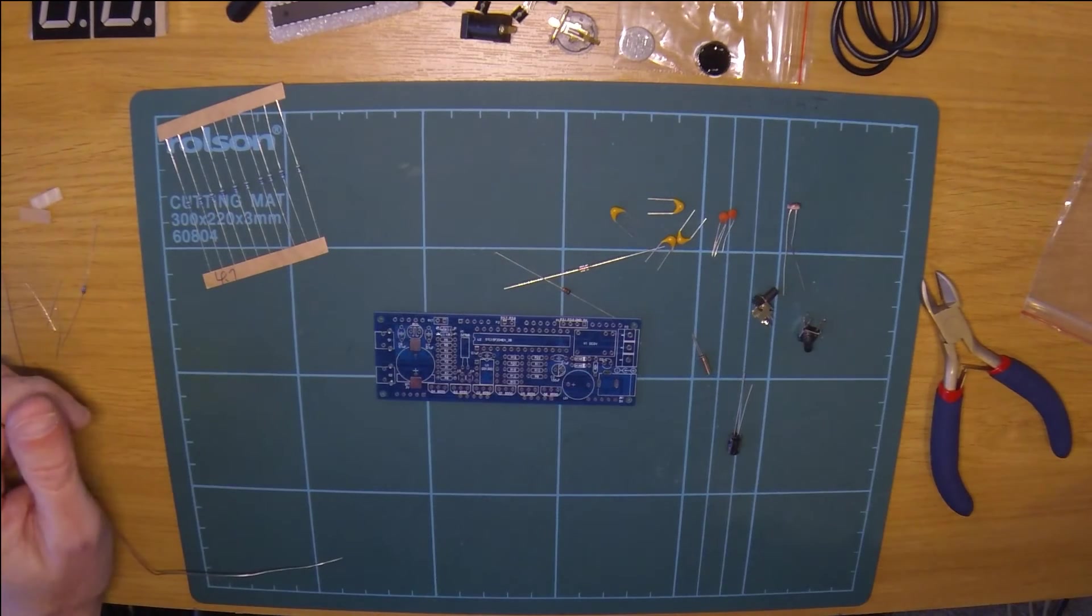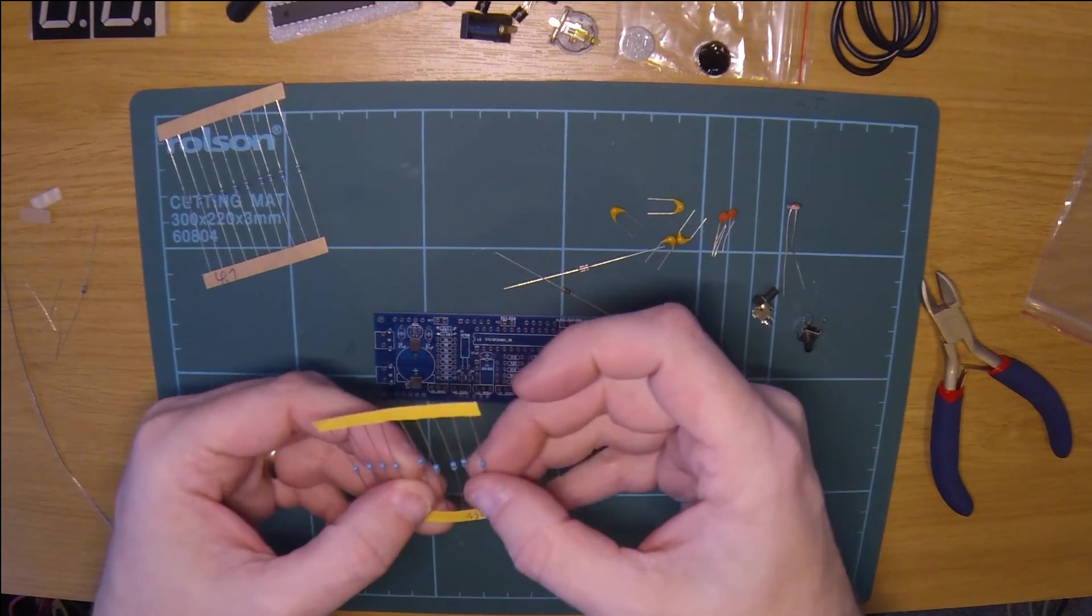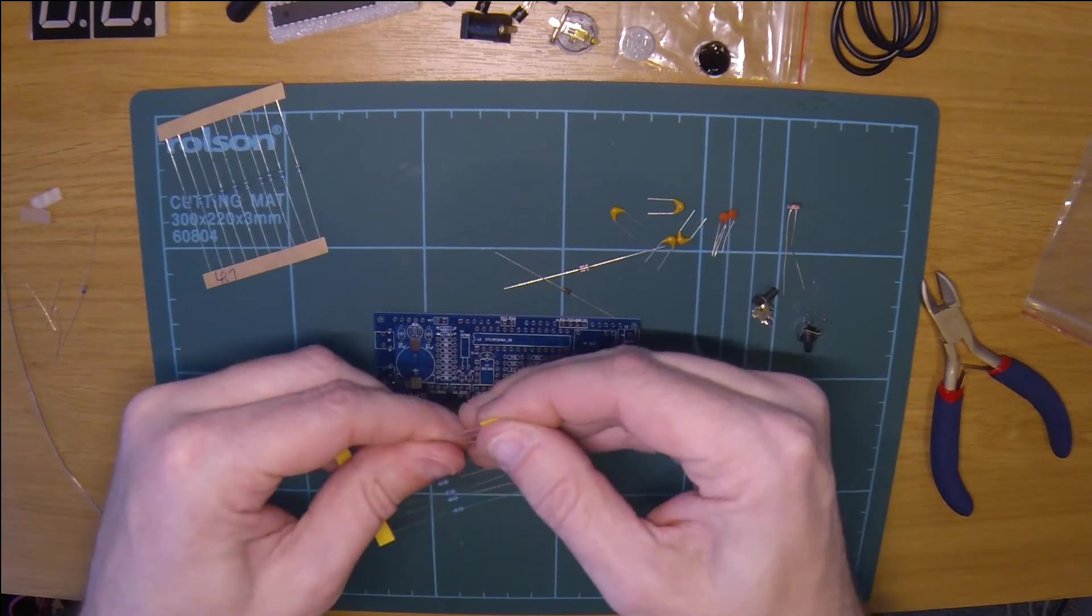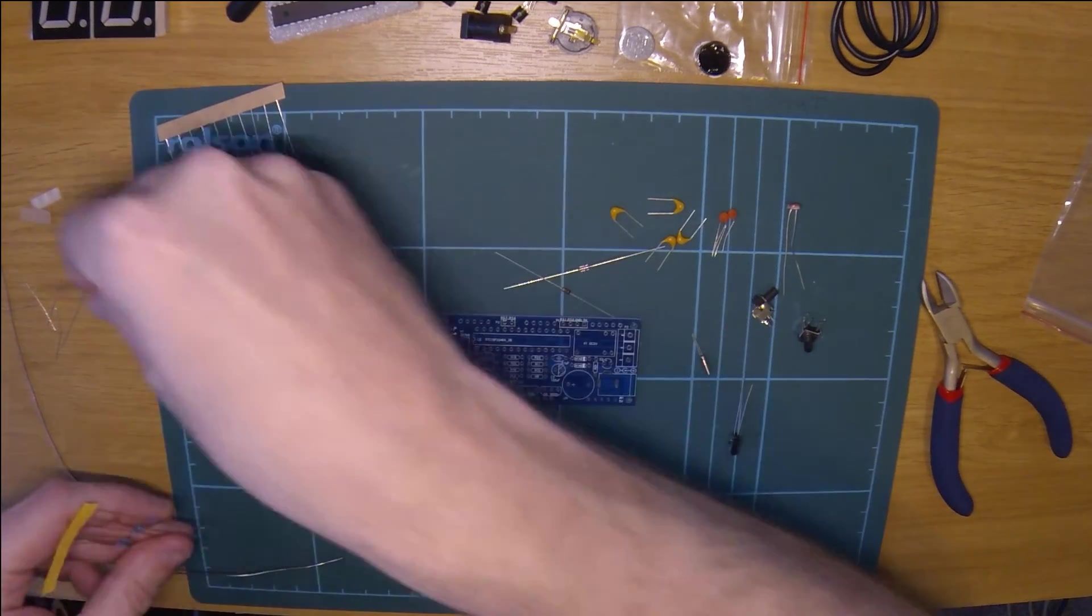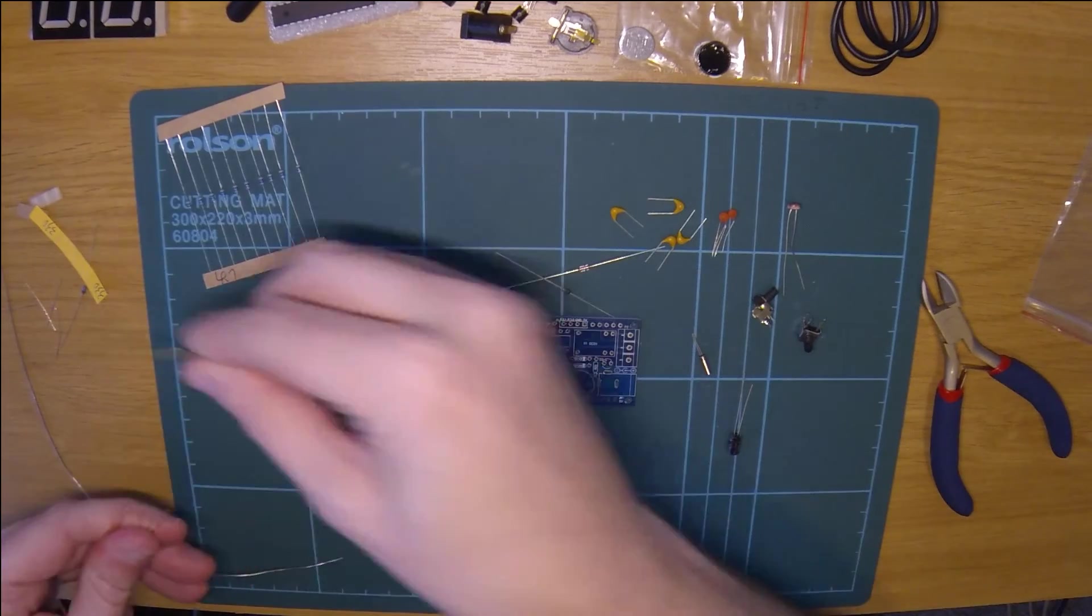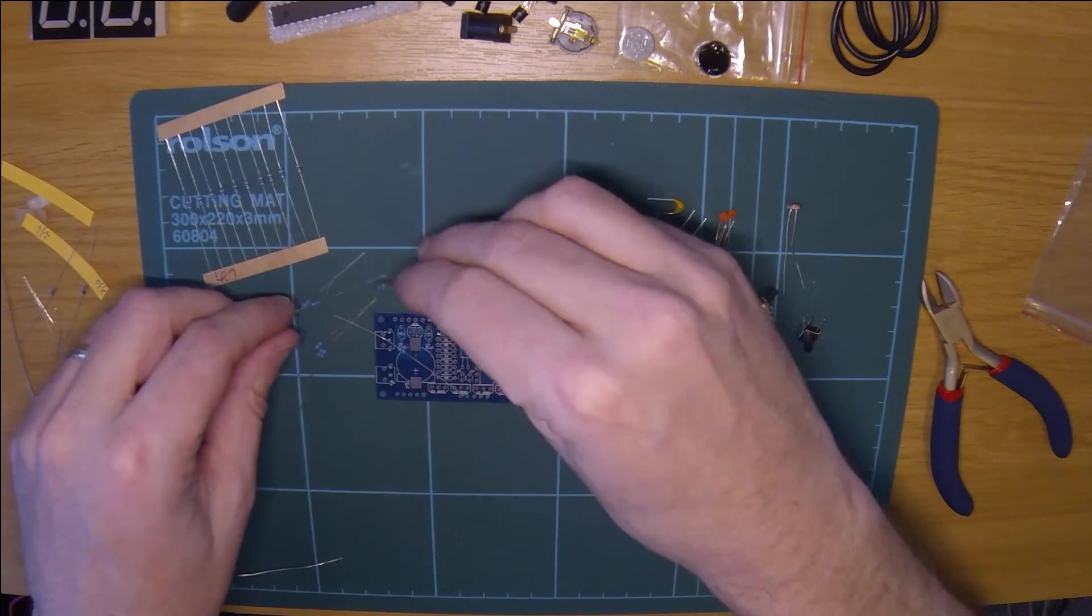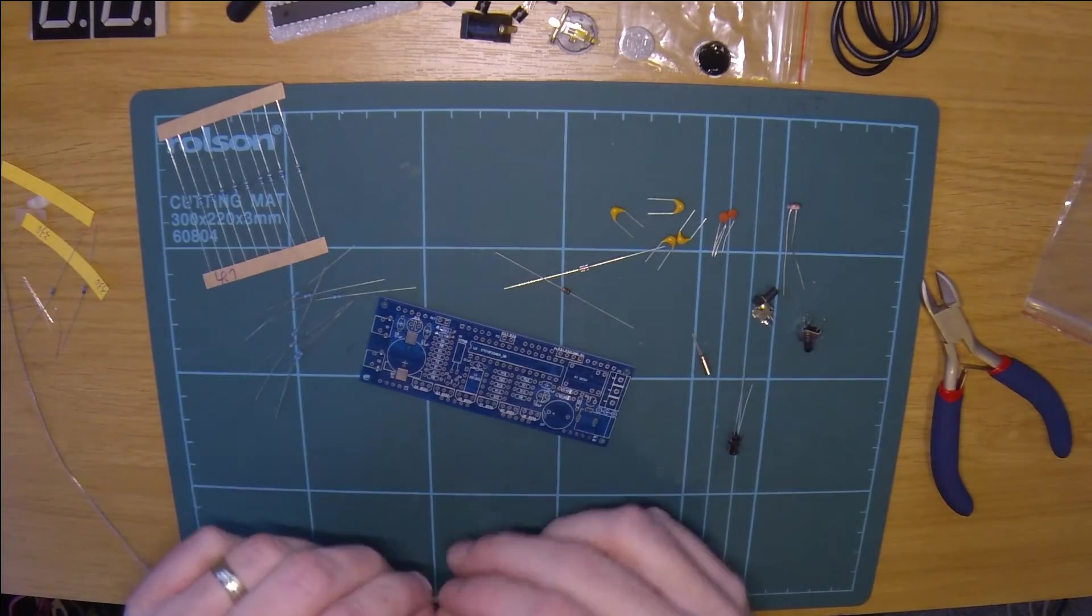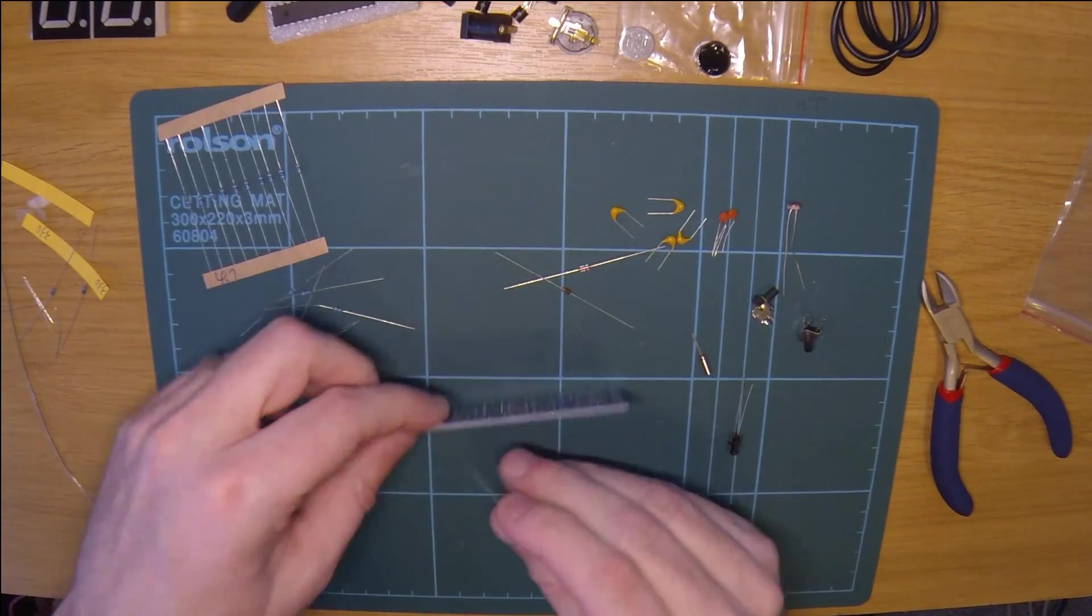Every other resistor down that row is a 330 ohm. So that's these. I'll move that 10k out of the way, we don't need him. And there are nine resistors in here, so I'll give you a spare again. So I'll take them out. Might as well take them all out. Keep the spare one over there.